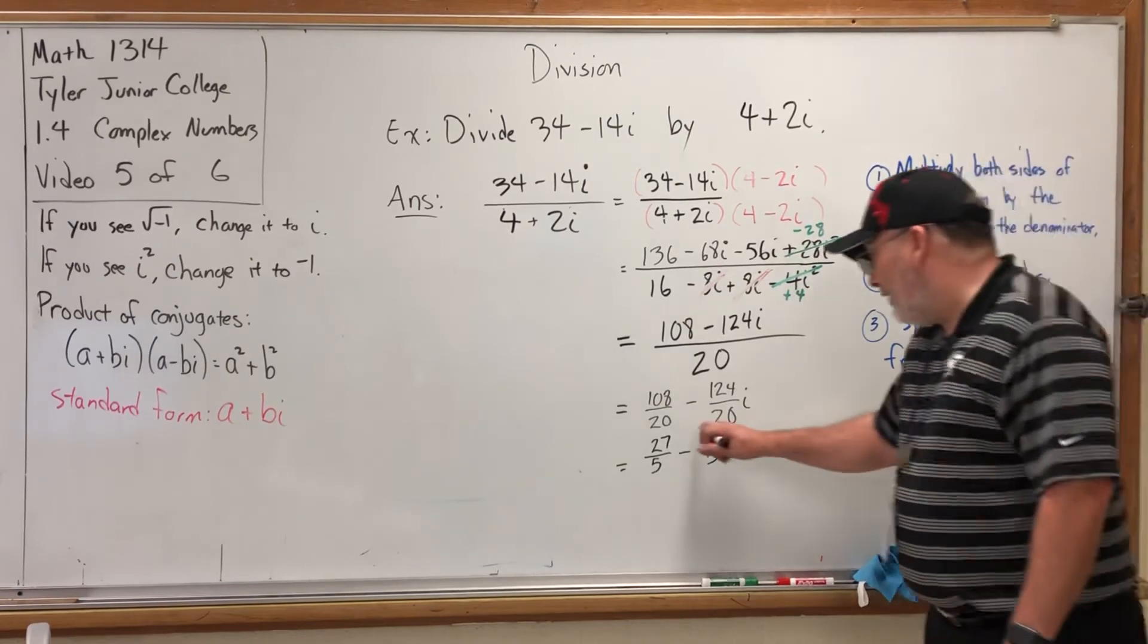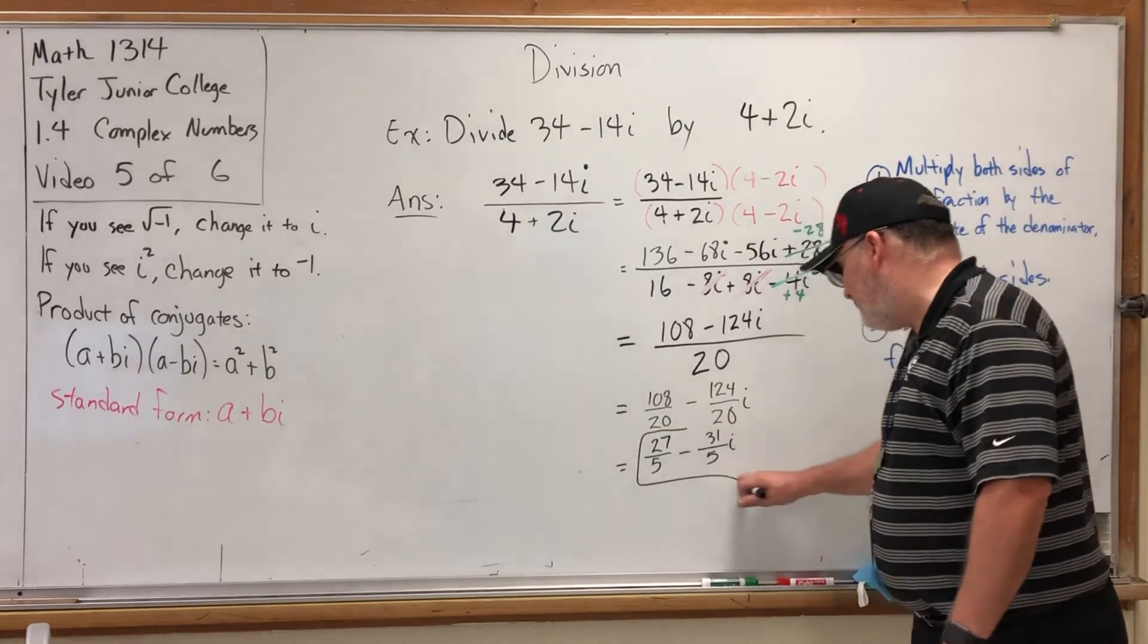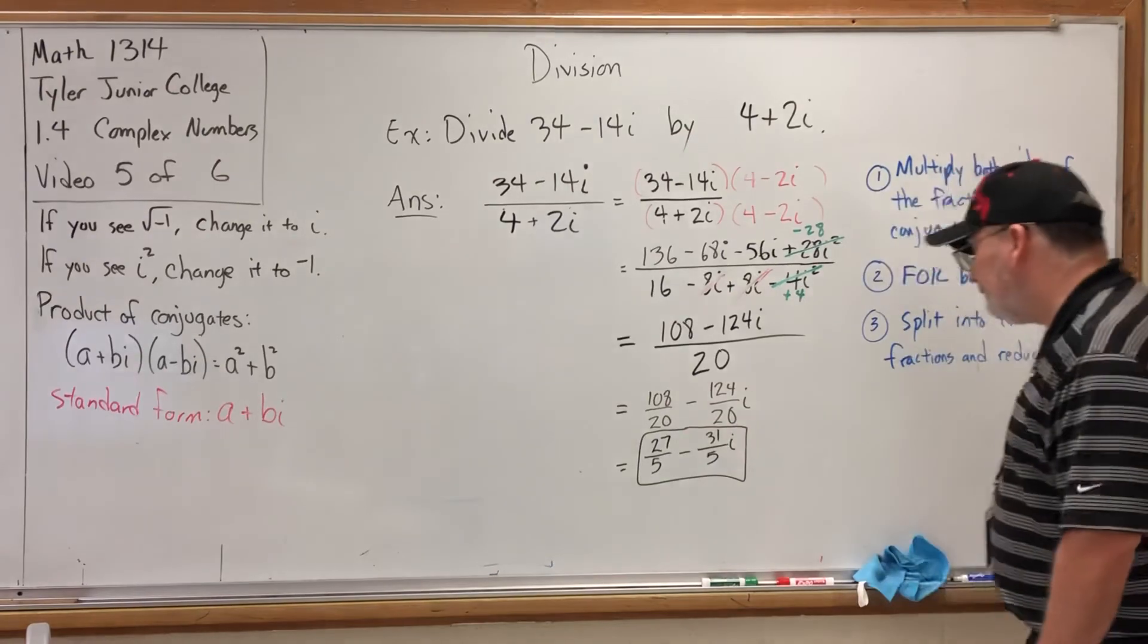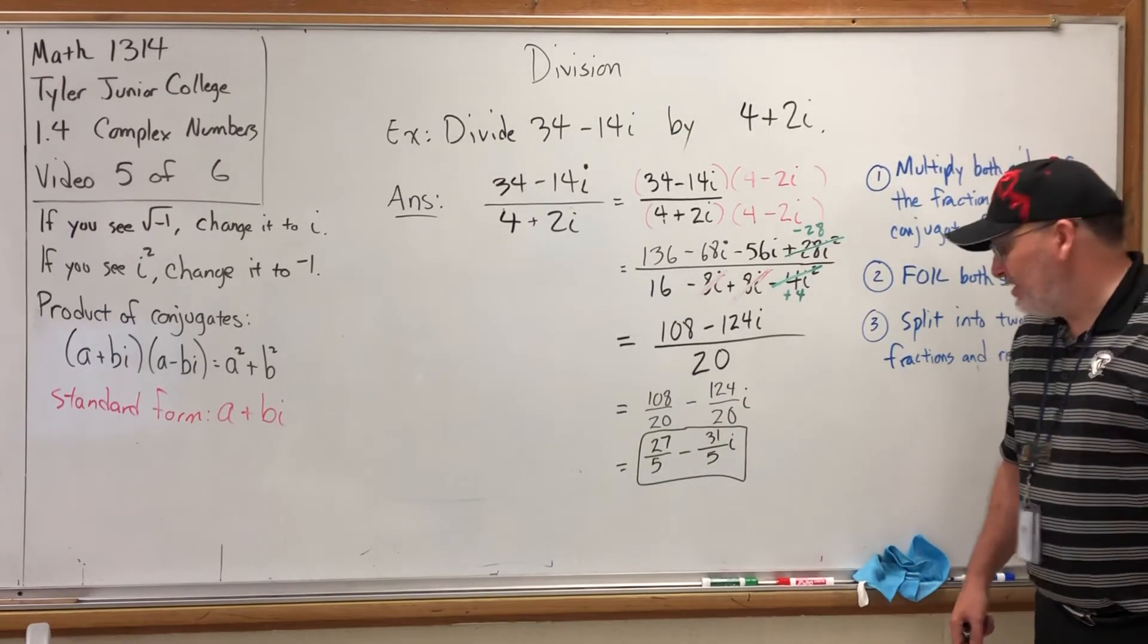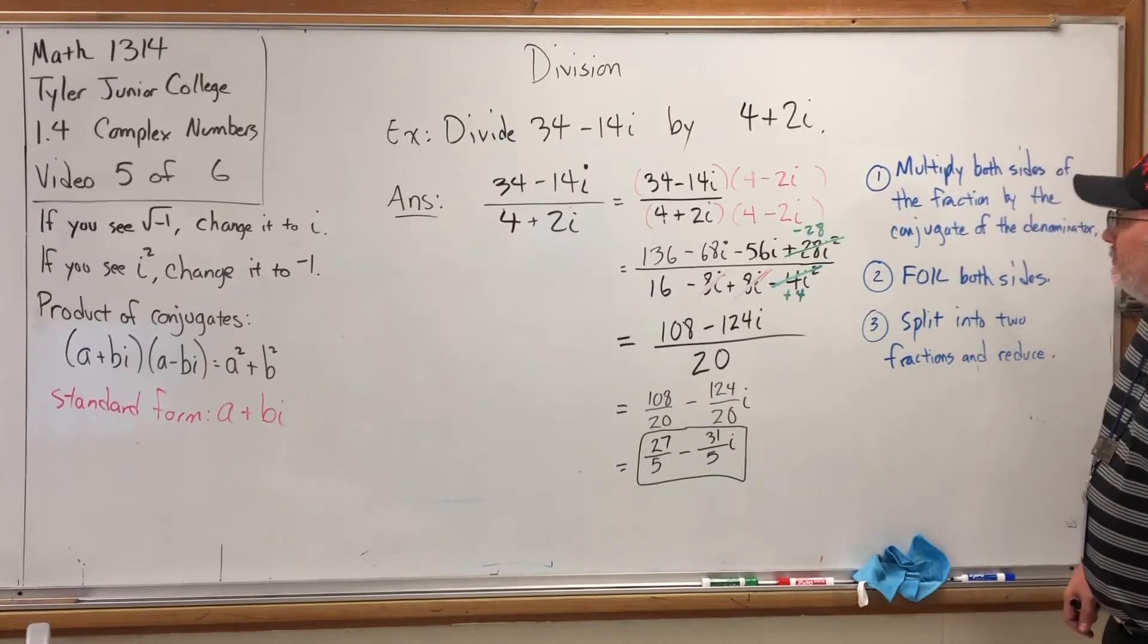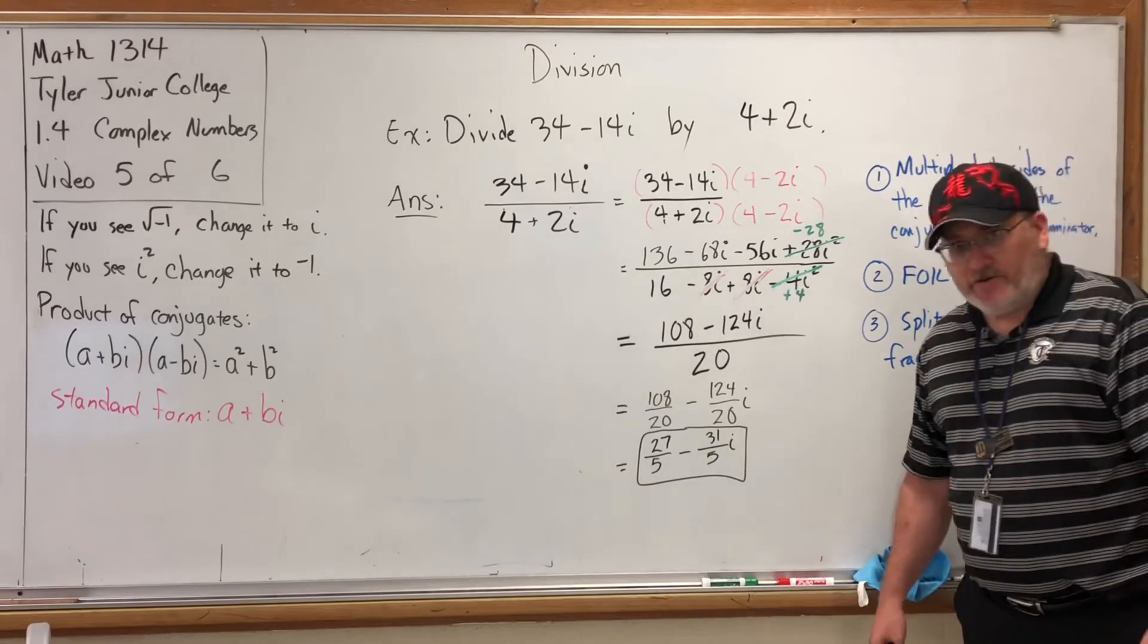And so, assuming everything went correctly—because I'm still suspecting there was a mistake somewhere—the answer to this division problem is 27/5 - 31i/5. The important thing before I pause the video and look for any errors: